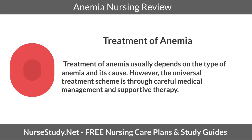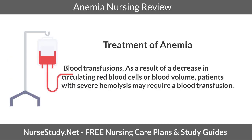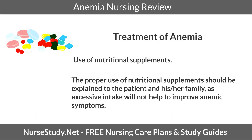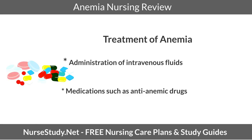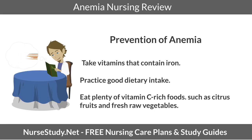Treatment of anemia usually depends on the type and its cause; however, the universal treatment scheme is through careful medical management and supportive therapy. Blood transfusion: patients with severe hemolysis may require a blood transfusion due to a decrease in circulating red blood cells or blood volume. Use of nutritional supplements: proper use should be explained to the patient and family, as excessive intake will not help improve anemic symptoms. Other treatments include administration of intravenous fluids and medications such as anti-anemic drugs. Prevention measures include taking vitamins that contain iron, practicing good dietary intake, and eating plenty of vitamin C-rich foods such as citrus fruits or fresh raw vegetables.